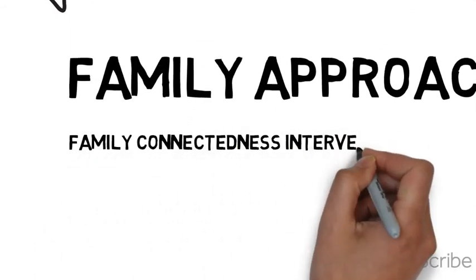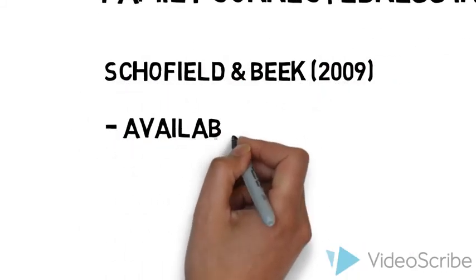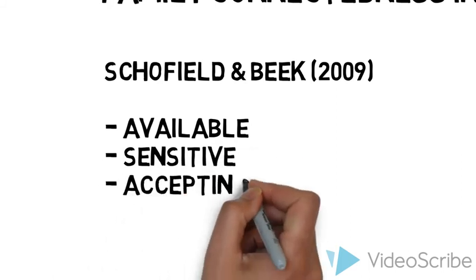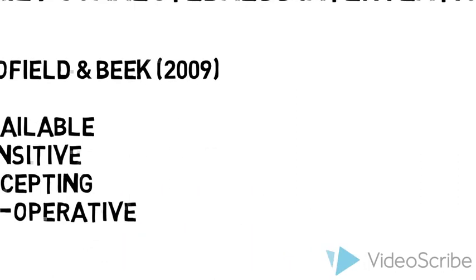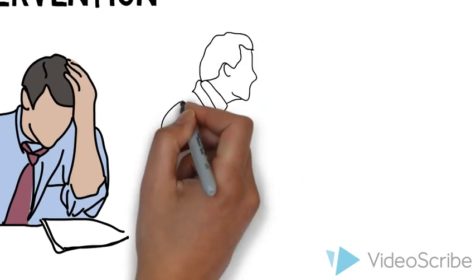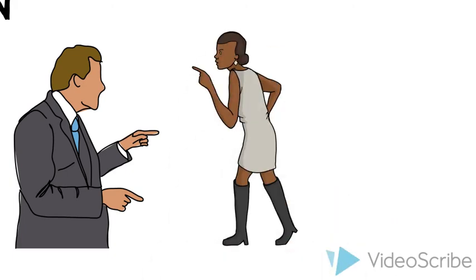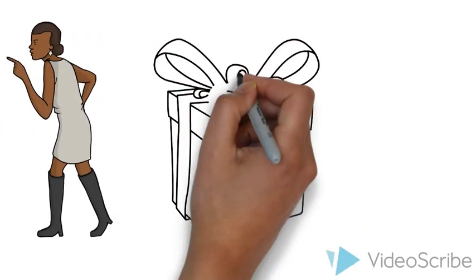Number three, family approach which can be achieved through the family connectedness intervention. A parent according to Schofield and Beak must be available, sensitive, accepting and cooperative. It is important that Dylan's parents learn how to cope with stress, communicate clear expectations, eliminate coercive parenting and reward positive behaviour if they wish to prevent and deter Dylan from engaging in risky behaviour.